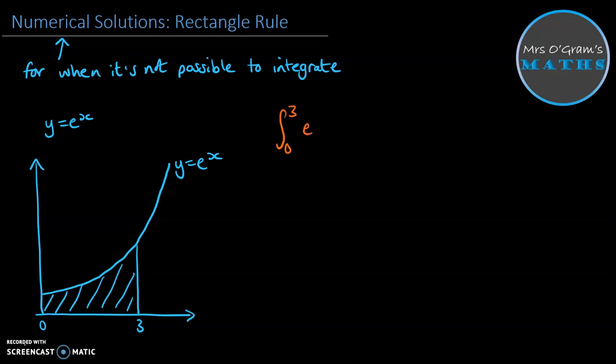Now, if we didn't know our rules of integration for e to the x, we wouldn't be able to work that out. But what we could do instead is split it up into rectangles. So let's say split it into three rectangles that cover these gaps: 0 to 1, 1 to 2, 2 to 3. Now, how could we use rectangles to estimate the area under that curve?